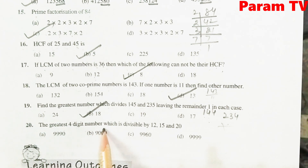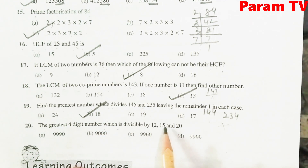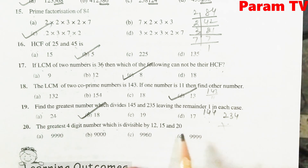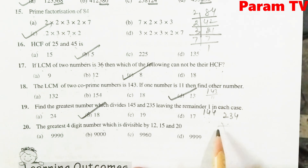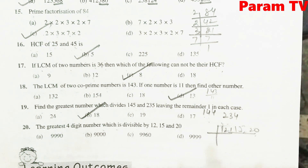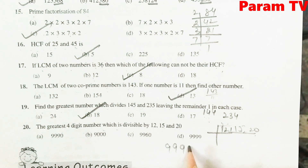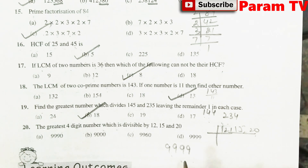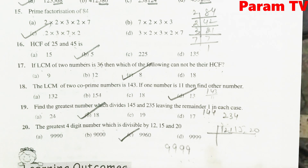The greatest 4-digit number which is divisible by 12, 15, and 20. यह sum हमने exercise 3.5 में solve किया था. पहले 12, 15, और 20 का LCM लेना होता है. Greatest 4-digit number is 9999. LCM से divide करके remainder minus करेंगे — right option is 9960.